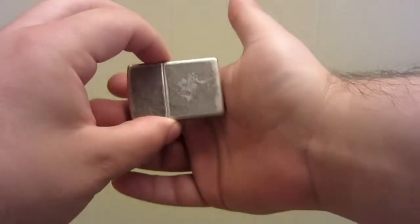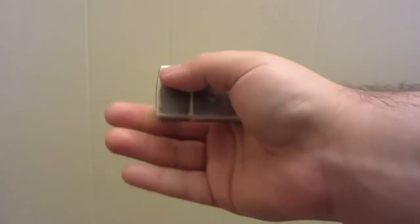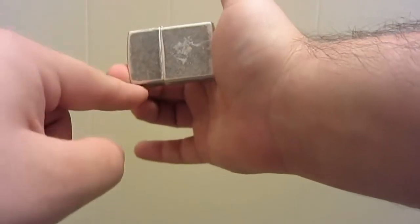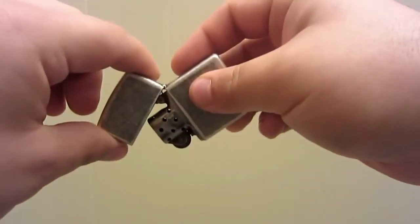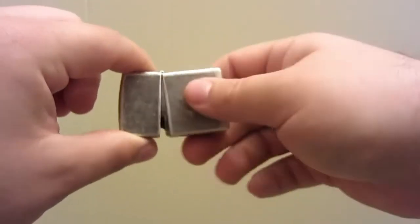So what you want to do to start off here is you want to hold the Zippo just like this. I'm going to break this down for you guys. First thing you want to do is take your middle finger and put it on the bottom portion of the lid here. Now you'll notice that the hinge is on top. This is how it opens.